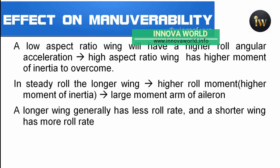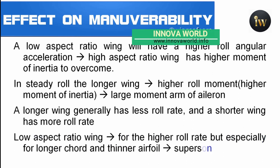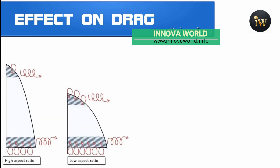The longer the wing, the less maneuverable it is, because longer wings have a higher moment of inertia — so longer wings generally have less roll rate and shorter wings have more roll rate. Low aspect ratio wings are used on fighter jets not only for higher roll rate, but especially for longer chords and thinner airfoils involved in supersonic flight.